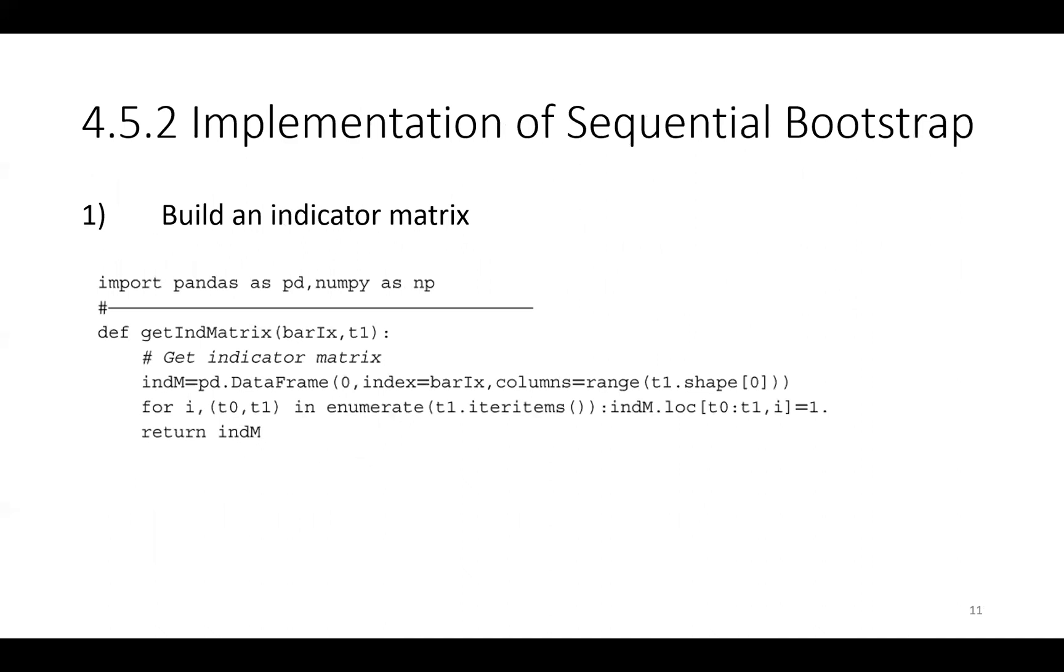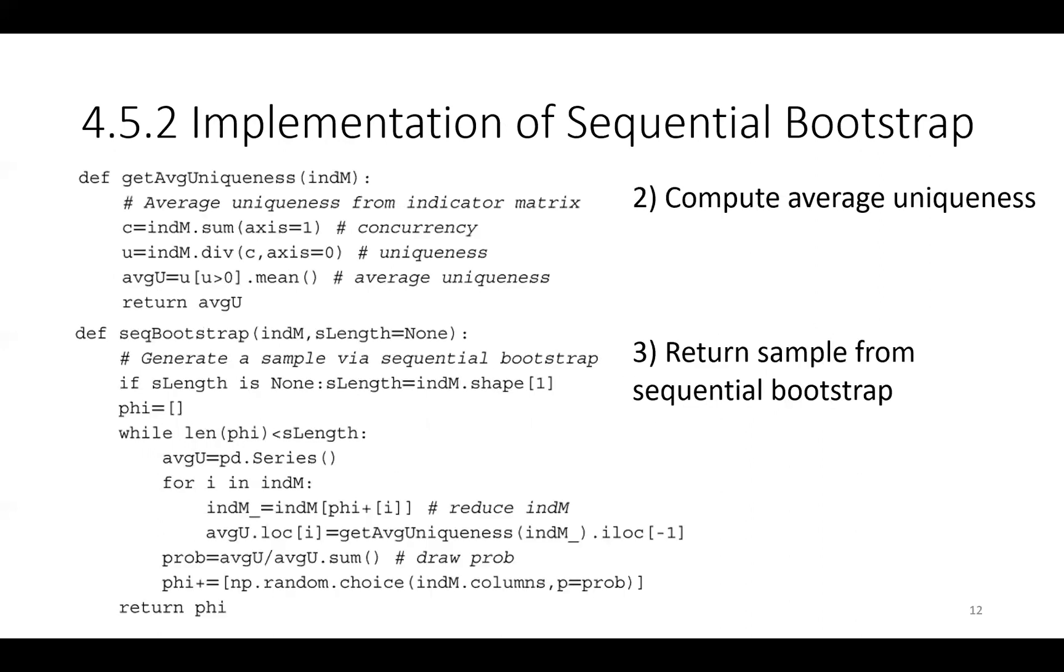And here we implement the sequential bootstrap method using programming language Python and Pandas and NumPy libraries. We start by building an indicator matrix and then we compute the average of uniqueness and finally we return the sample from the sequential bootstrap method.